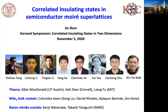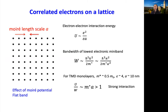All those experiments wouldn't be possible without the high-quality crystals — WSe2 from the Columbia crystal growth team and boron nitride crystal from Japan. We have seen this picture half an hour ago in the last talk. The recipe to get into strong correlation is to make the separation between the charges big.